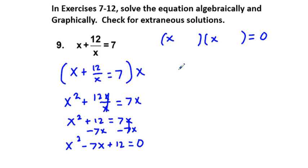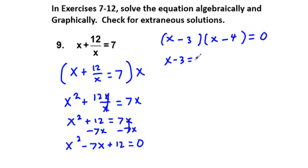Since we have negative 7 and positive 12, we're going to have a negative times a negative again. How about 3 and 4? Because 3 plus 4 is 7 and 3 times 4 is 12. So we know that x minus 3 is equal to 0 and x minus 4 is equal to 0, setting each factor equal to 0. So we have x equals 3 and x equals 4.